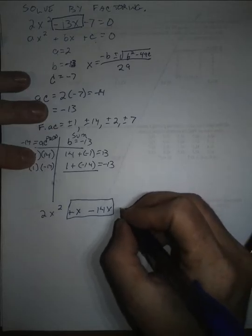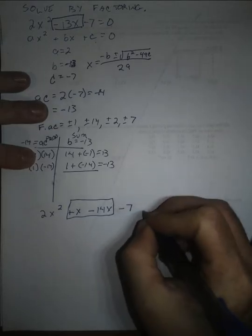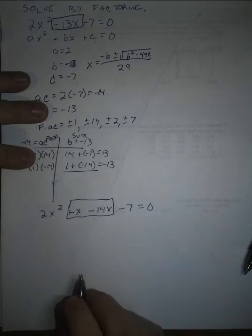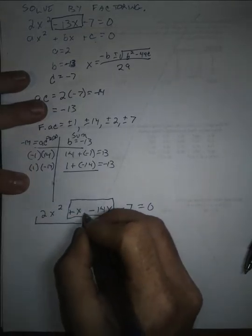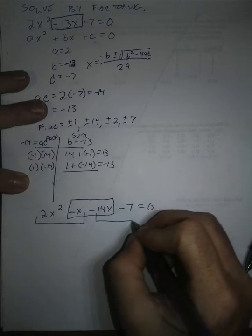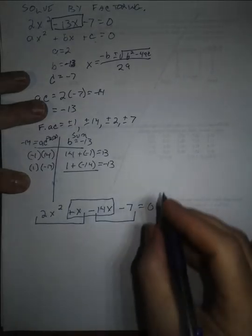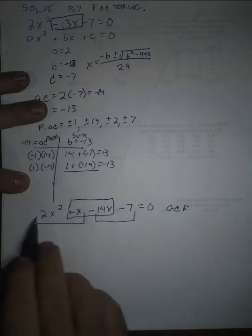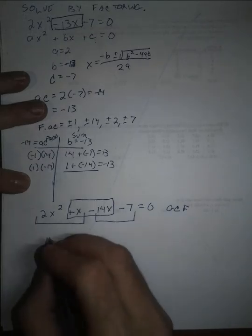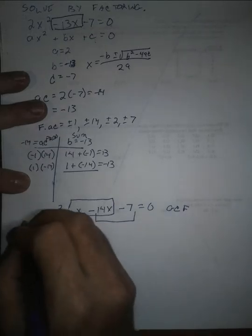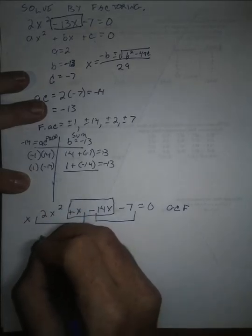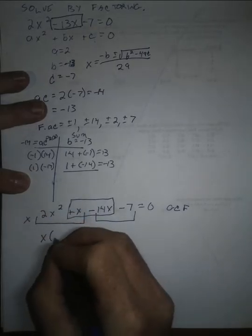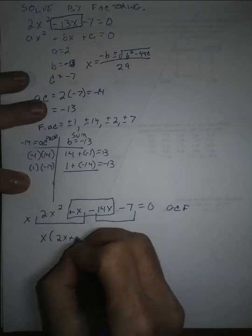And then this is going to be minus 7, and it's still equal to 0. At this point, we group the first two terms and the second two terms and factor out the greatest common factor. In my first two terms, my greatest common factor is x, and so I get x times 2x plus 1.